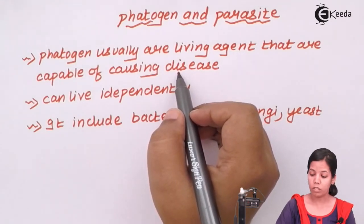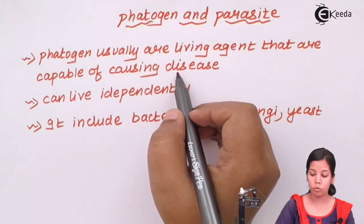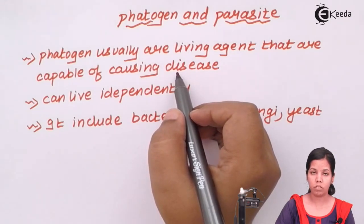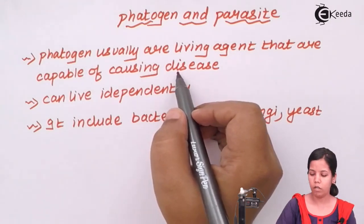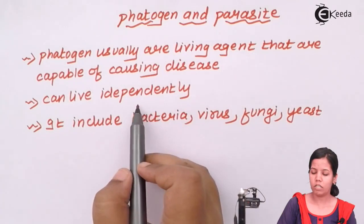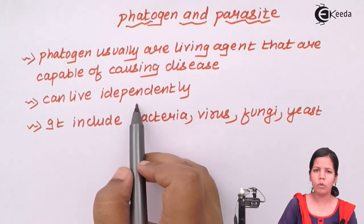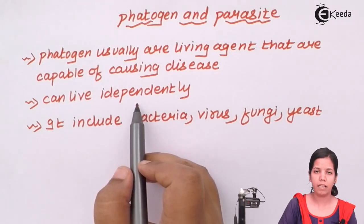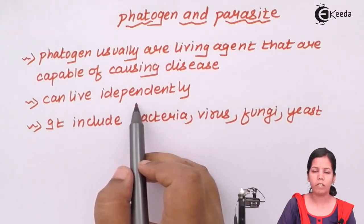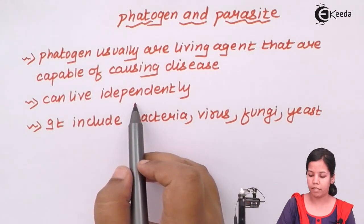Similarly, Candida albicans, which is a form of yeast and a pathogen, can cause a disease if it grows above a certain level. So these pathogenic agents can live independently — they don't always need a host to survive or to thrive. For example, certain E. coli present in the soil or in the atmosphere can thrive irrespective of whether a host is present or not.